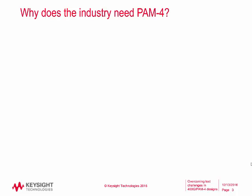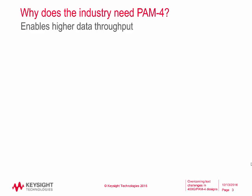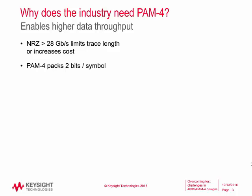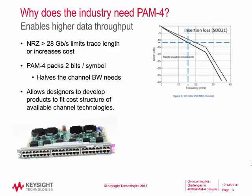So why does the industry need PAM-4? In a nutshell, it enables higher data throughput — we're effectively able to double the throughput in roughly half the bandwidth. The goal is to continue using existing channel technologies, whether it be fiber or printed circuit board material that we're using today, but increase the throughput.